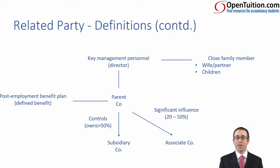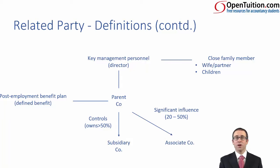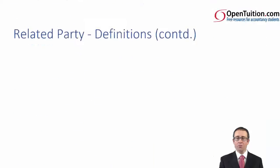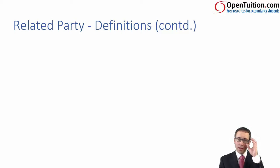So, as long as there is an unbroken chain of control or influence, then there is a related party. Key management personnel — directors — are also related parties. Close family members of the directors are related parties of the group. Any post-employment benefit plan, such as a defined benefit pension scheme, is also a related party. Control is the power to direct; influence is the power to participate.